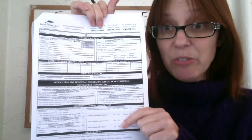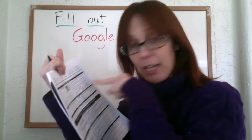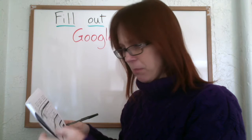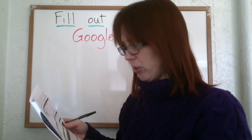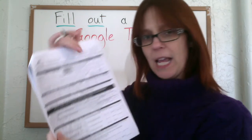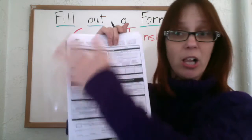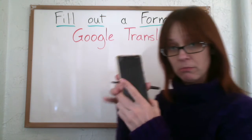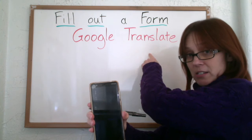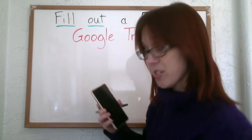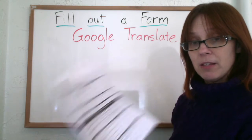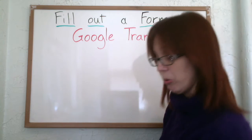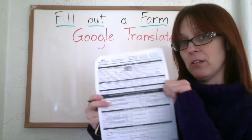Here is a form and it is very complicated — a lot of English. I look at the form and I see first name, last name, telephone number, date of birth. And then I see many things that I do not understand. So I can use my phone with Google Translate, the app, to understand the form. I'm going to show you how to use Google Translate to read a form.